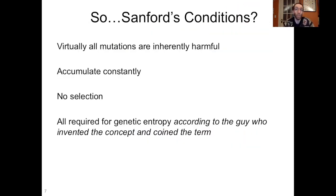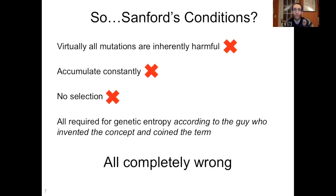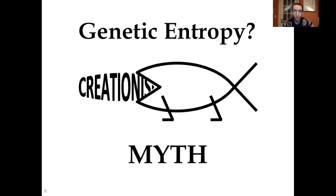So Sanford's conditions for genetic entropy: virtually all mutations are inherently harmful — false. Mutations have to accumulate constantly at a constant rate — also false. And there can be no selection removing them from the population — also false. All of these things are required for genetic entropy, according to the guy who invented the concept and coined the term. And all of them are completely wrong. For that reason, genetic entropy is a myth.